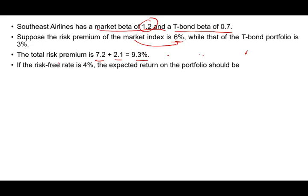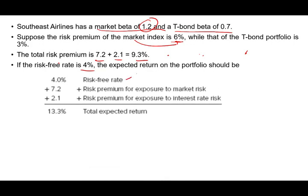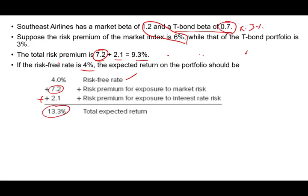Assuming the risk-free rate is 4%, the expected return on the portfolio will be 4% plus 7.2% plus 2.1%, giving a total expected return of 13.3%. In the regression formula, the risk-free rate is the y-intercept, and those are the two factors.